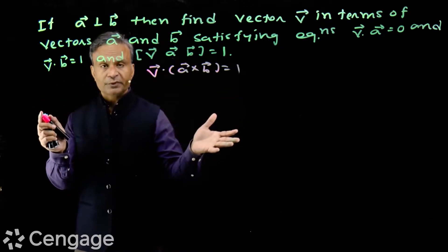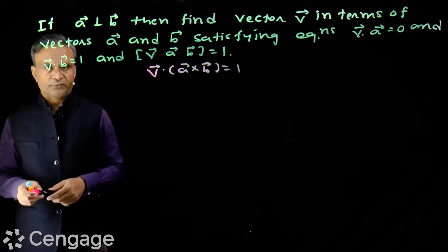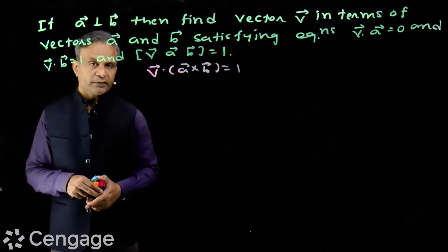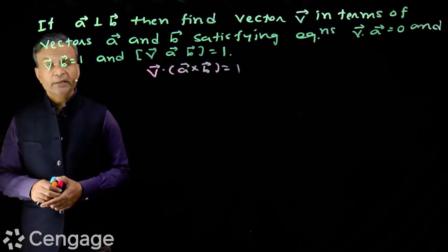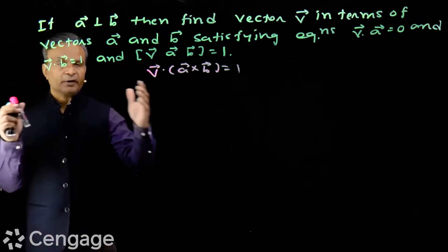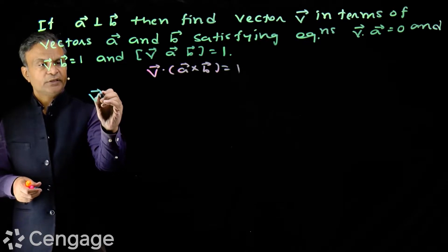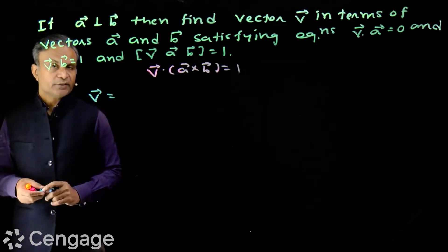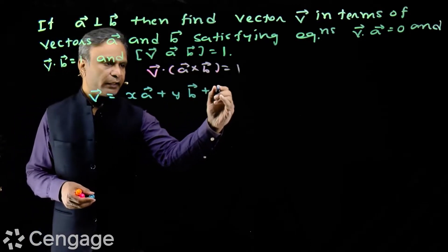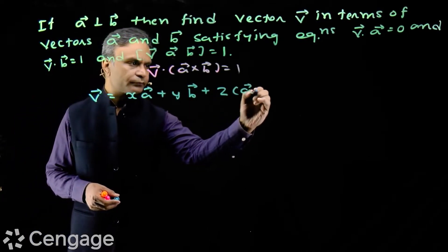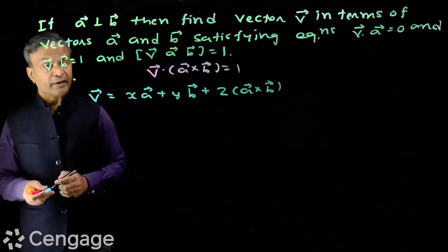So, to create a space, the third vector will be a cross b. If two non-collinear vectors are given, then the third vector will be a cross b to define the space. So, we can write vector v as a linear combination of three vectors a, b, and a cross b. These three vectors are non-coplanar, independent vectors.